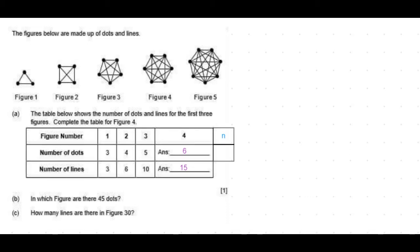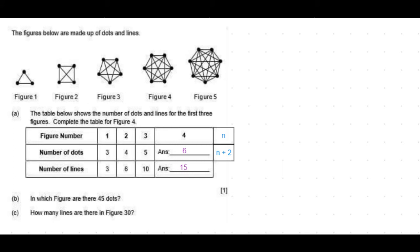Let's derive the formula for number of dots. For figure number one there are three dots which is two more than one. For figure number two there are four dots which is again two more than the figure number. So for figure number n, the number of dots will be n plus 2. That is very simple.